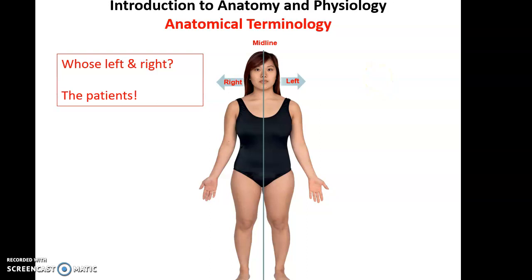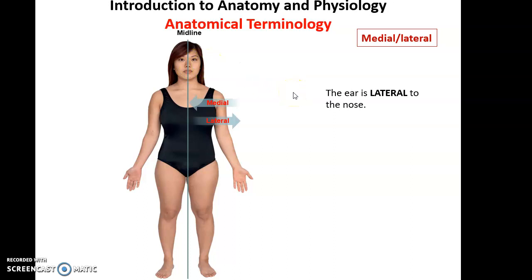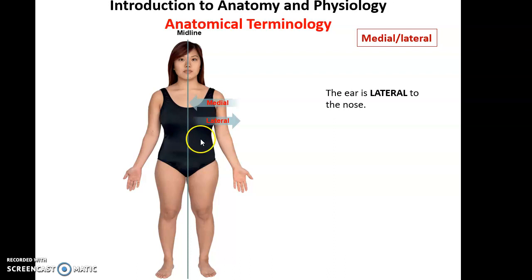Going back to the concept of the midline running down the middle of the body, we have the terms medial and lateral. Medial means something is closer to the midline, while lateral means something is further away from the midline. The ear is lateral to the nose — further away from the midline. The nose is actually on the midline. The hand is lateral to the thigh, and the left kidney is medial to the elbow — closer to the midline than the elbow is.